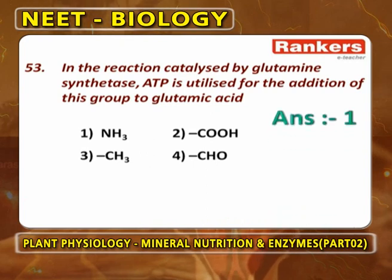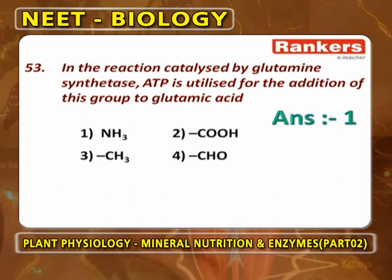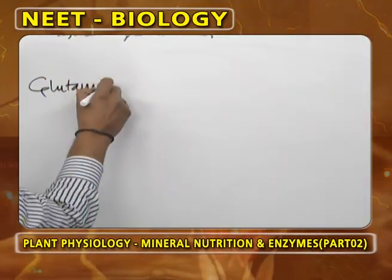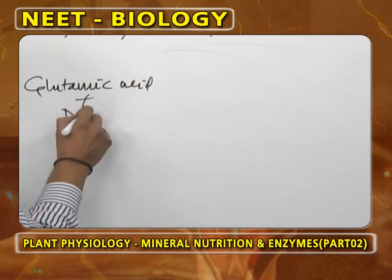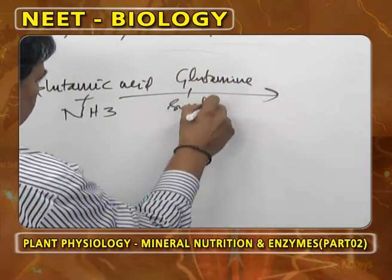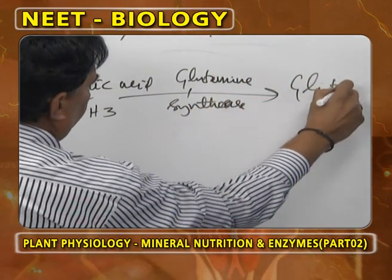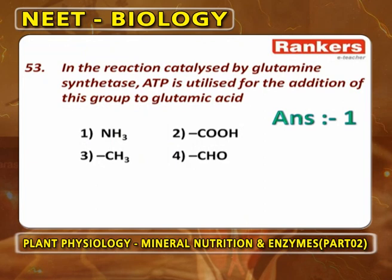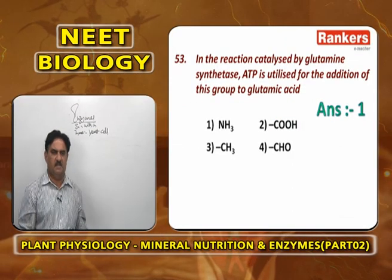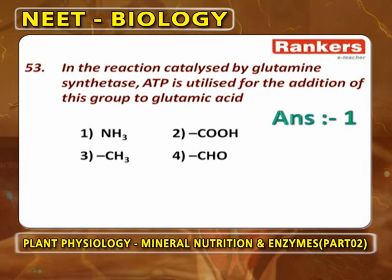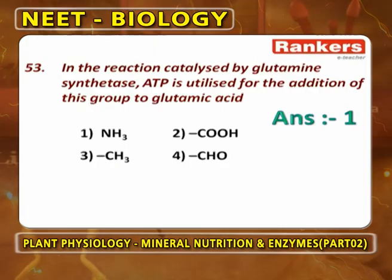In the reaction catalyzed by glutamine synthetase, ATP is utilized for the addition of an ammonium group to glutamic acid. Glutamic acid plus ammonia, in the presence of glutamine synthetase — which is a ligase enzyme utilizing ATP — produces glutamine, an amino acid. It comes under the category of ligases or synthetases, where ATP energy is utilized to produce new bonds.